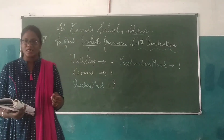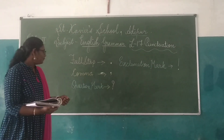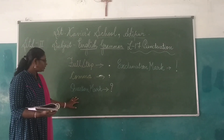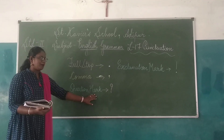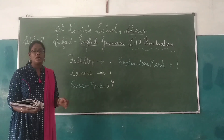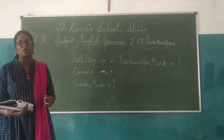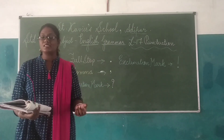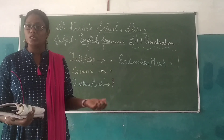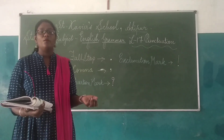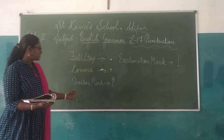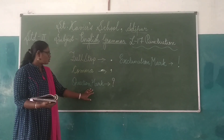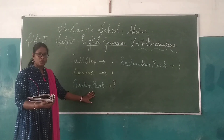Now the third one — that is the question mark. We use the question mark when we are asking a question to someone. For example: 'What are you doing?' and 'Where are you going?' — these sentences use a question mark.